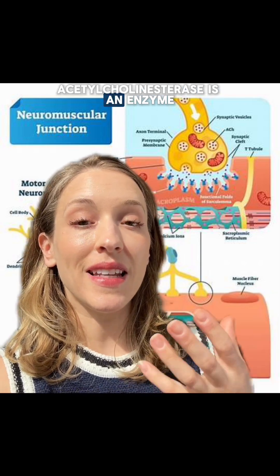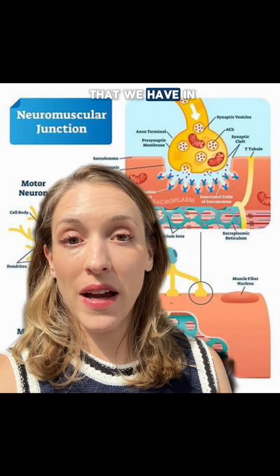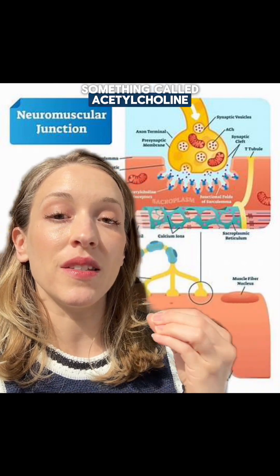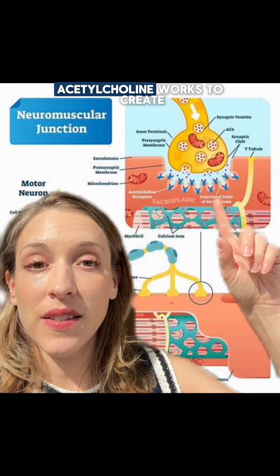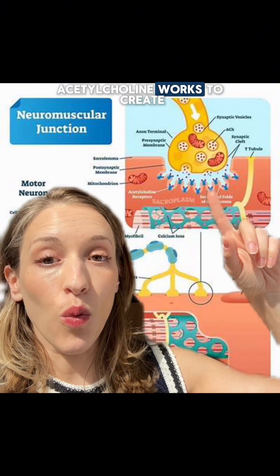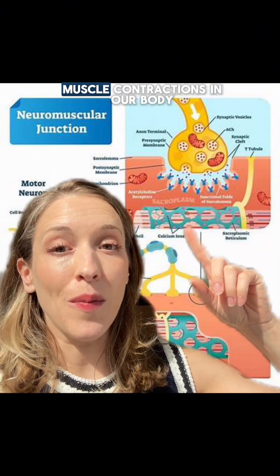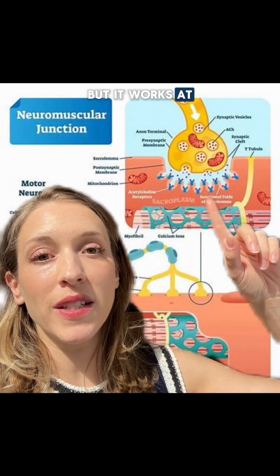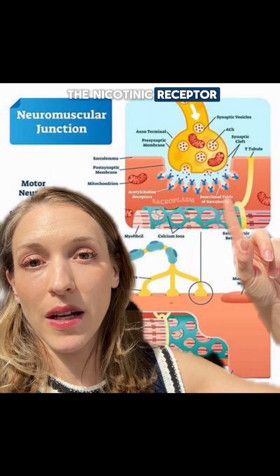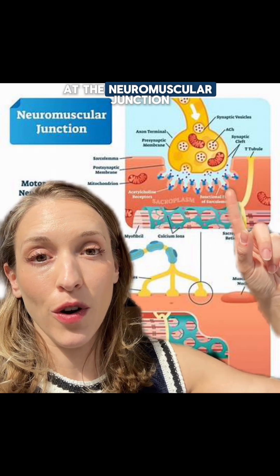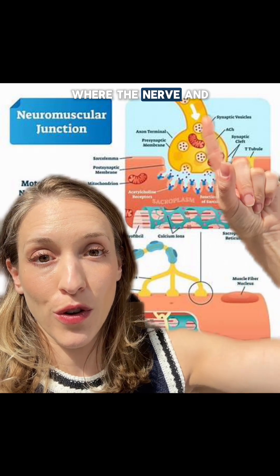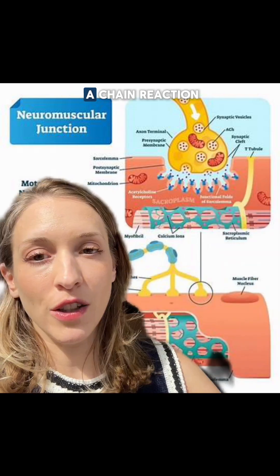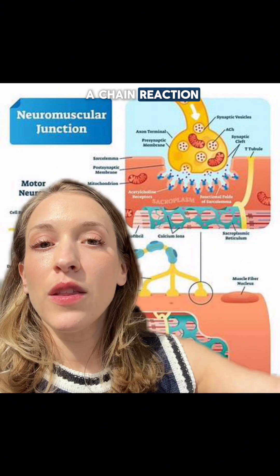Acetylcholinesterase is an enzyme in our bodies that normally breaks down acetylcholine. Acetylcholine works to create muscle contractions in our body — it does lots of other things as well, but it works at the nicotinic receptor at the neuromuscular junction, where the nerve and the muscle meet, to trigger movement through a chain reaction.